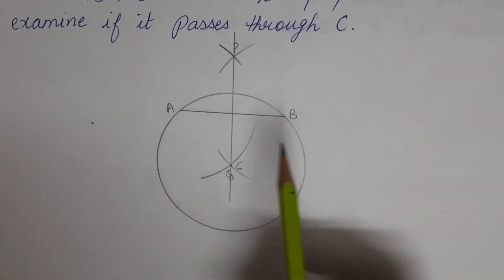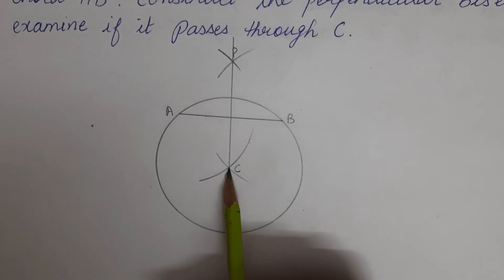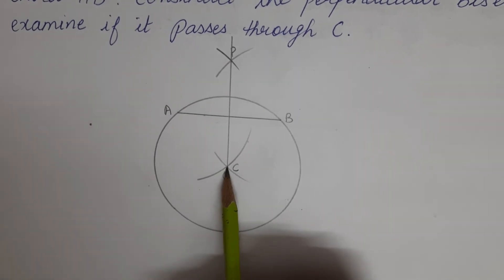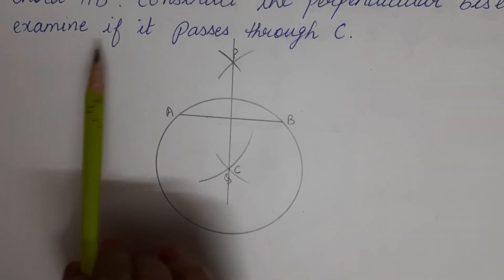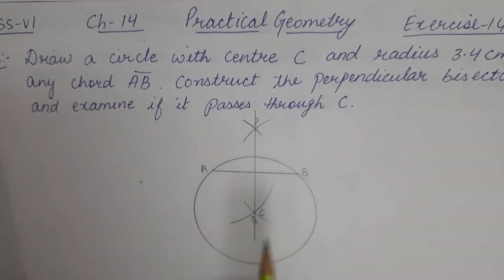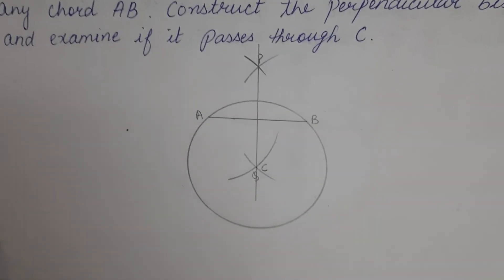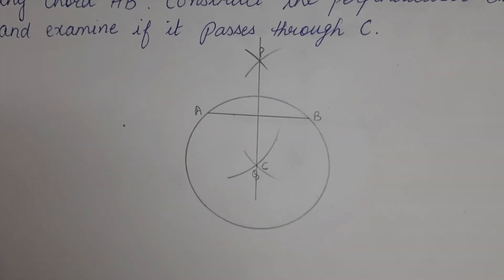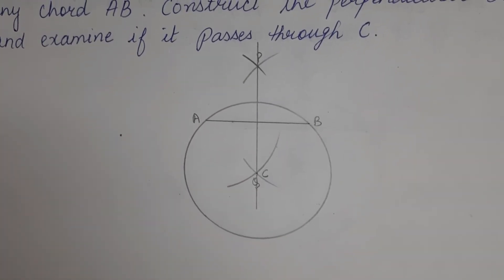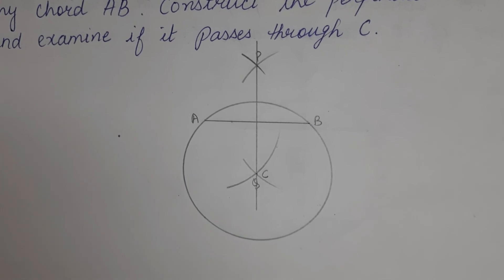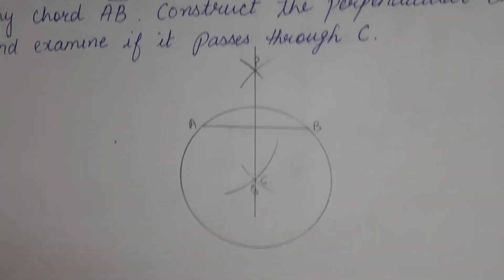This perpendicular bisector of AB passes through the center C of the circle. The question asked us to examine if it passes through C — yes, it passes through center C of the circle. This completes question number six of Exercise 14.5.